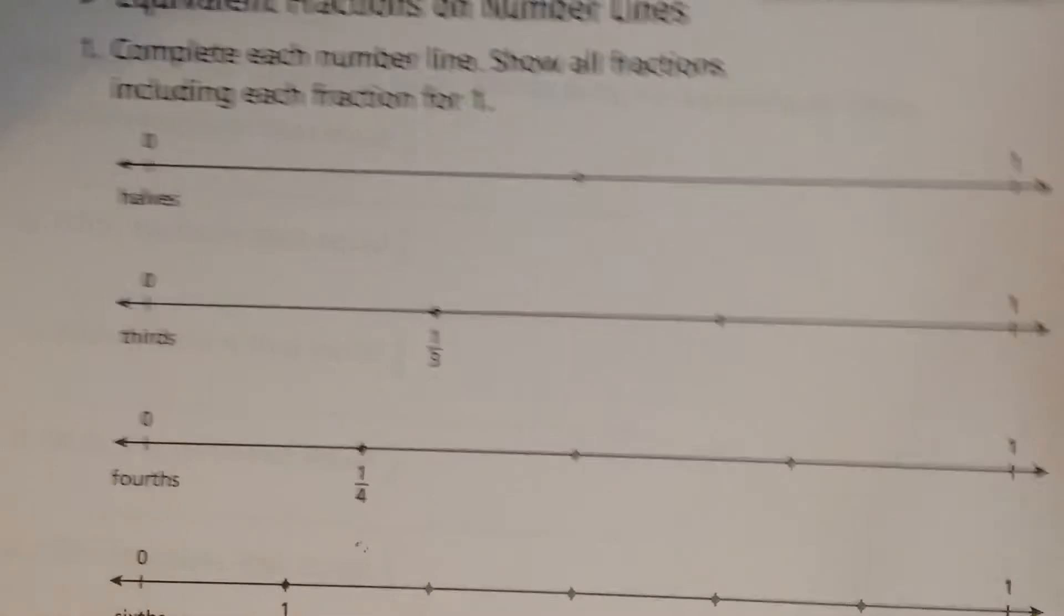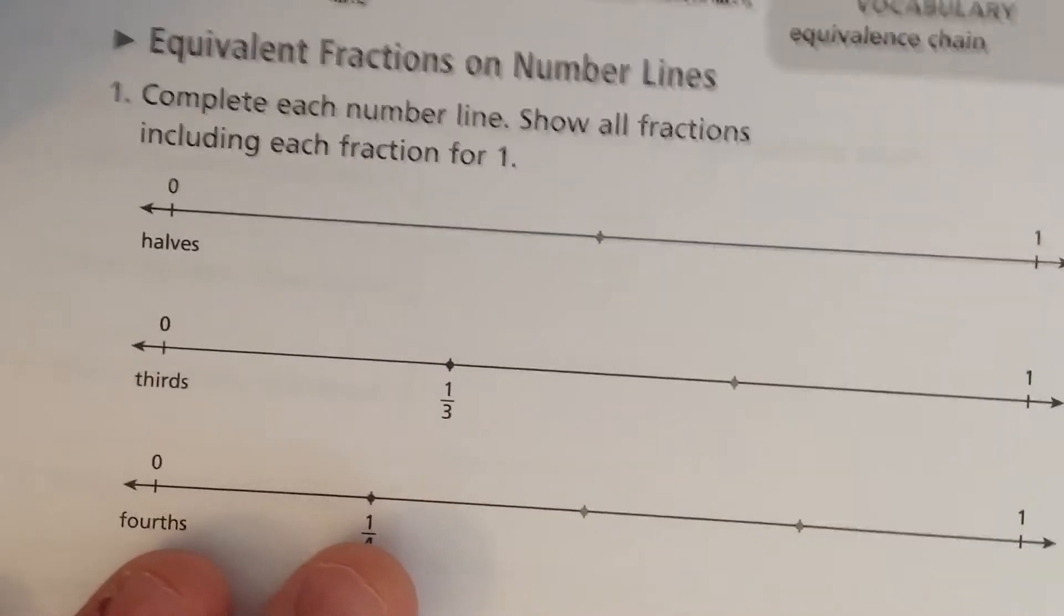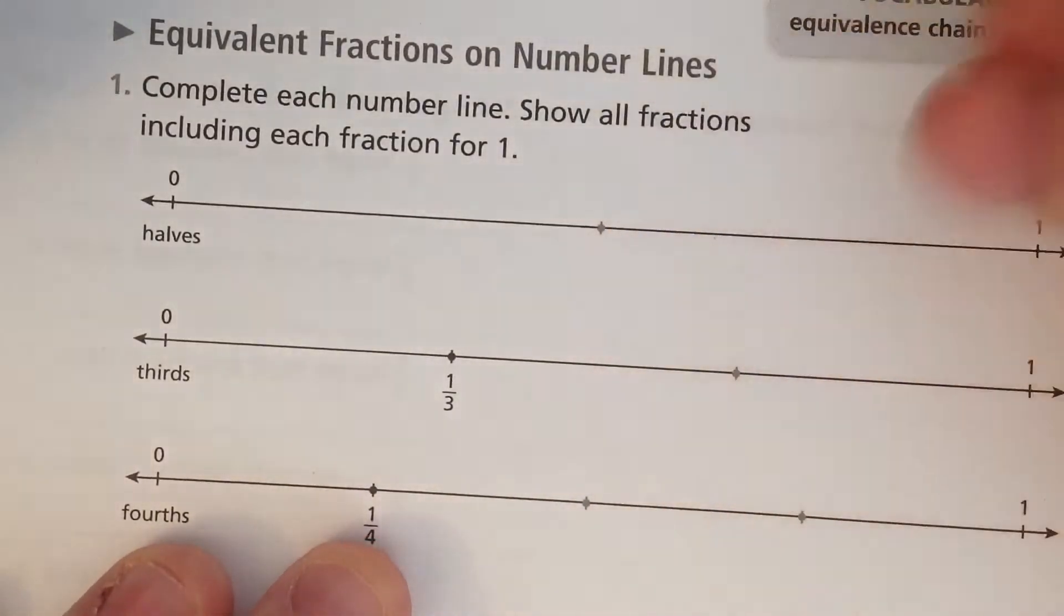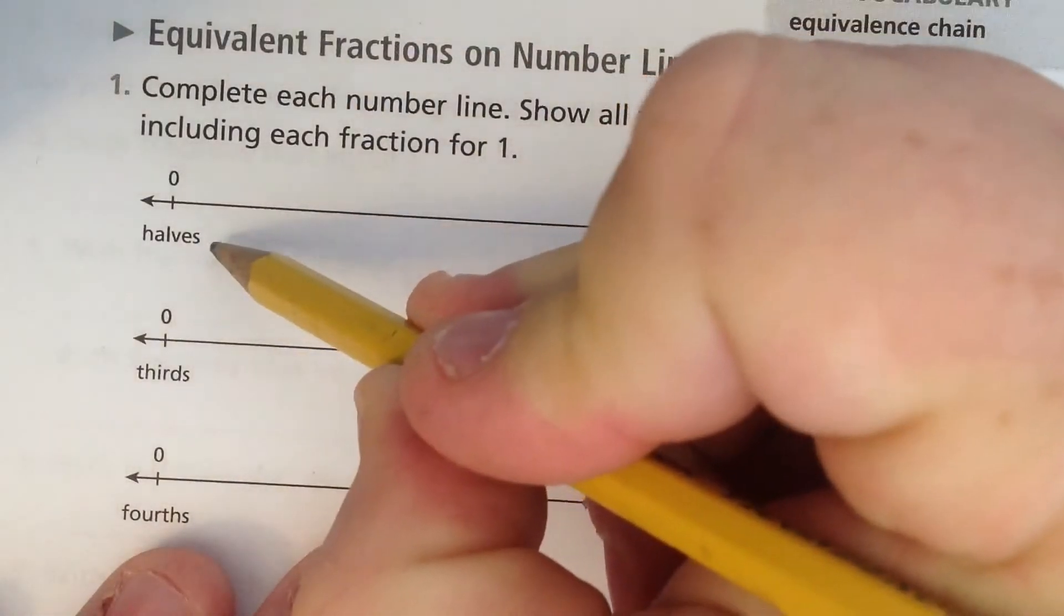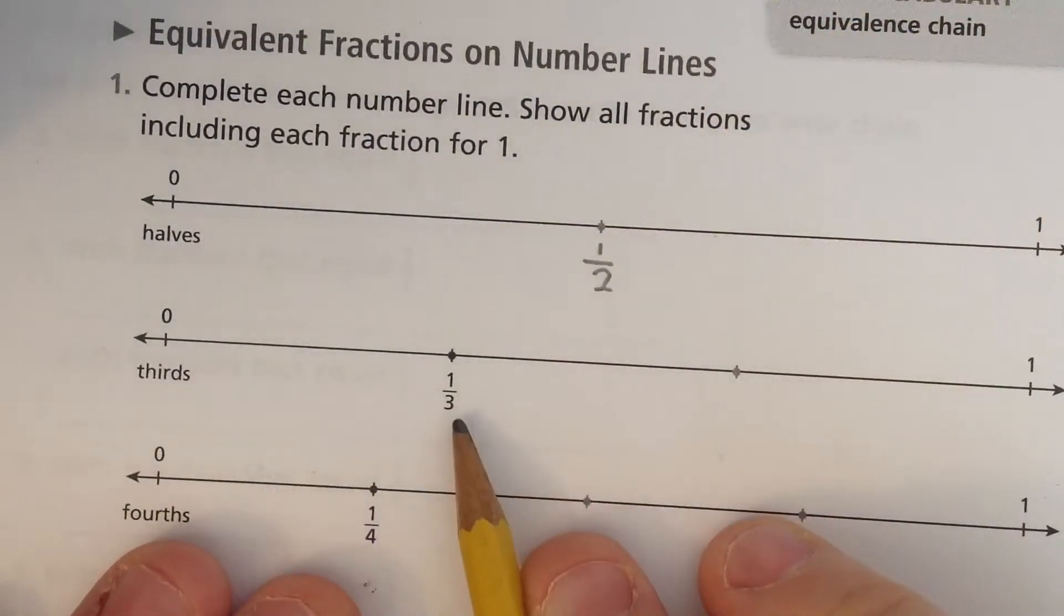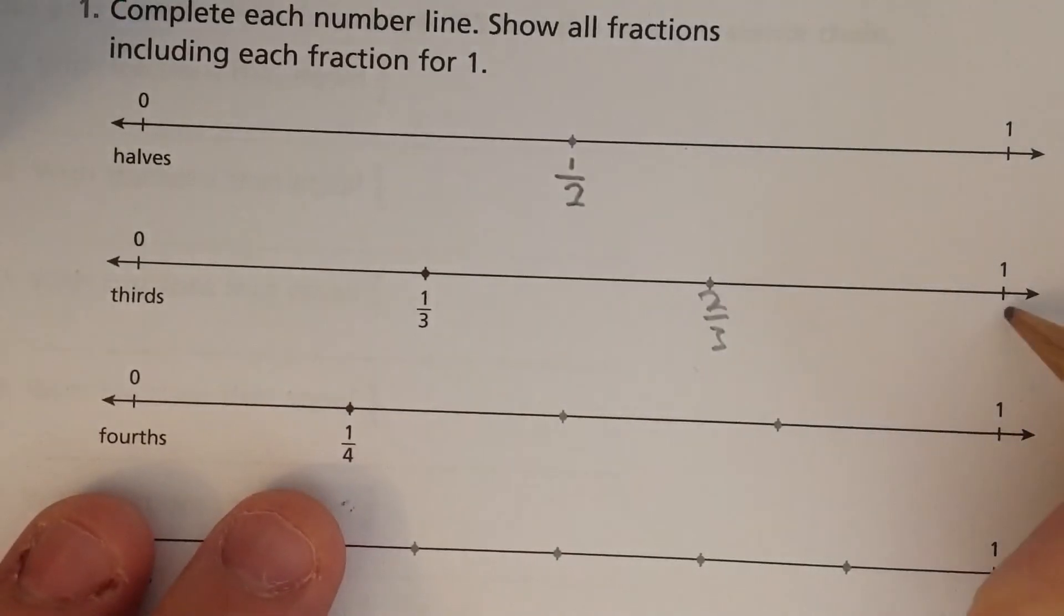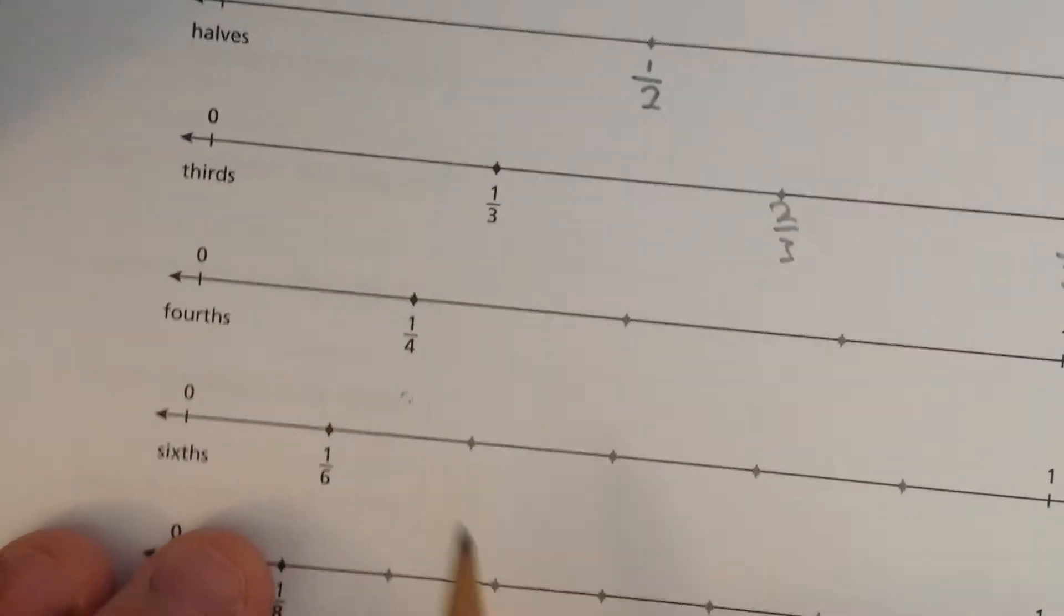So if you look at today's page, they want you to, underneath all the dots, write the fraction. So this is halves. So under here, I'm going to write one-half. This is one-third. So this is going to be two-thirds. If I wanted to, I could even write three-thirds over here and two-halves over here. In fact, why don't you do that?